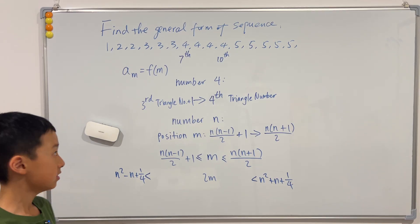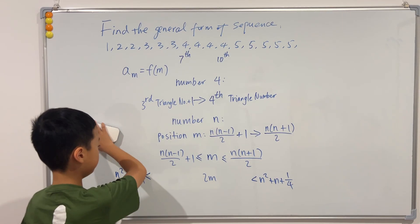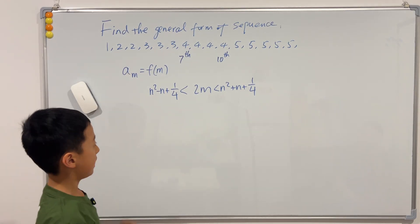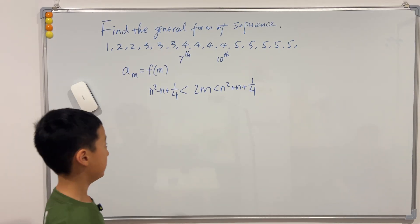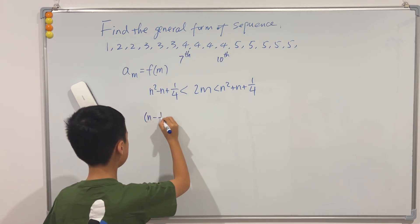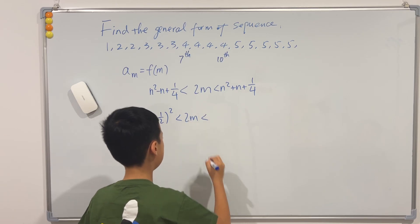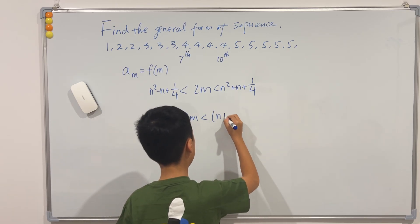Like this. So if I rub everything out and write this at the top. Okay, so now we can complete the squares, so this will just be n minus one half squared less than 2m less than n plus one half squared.